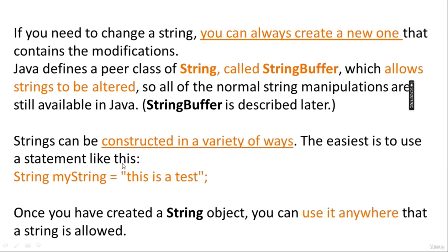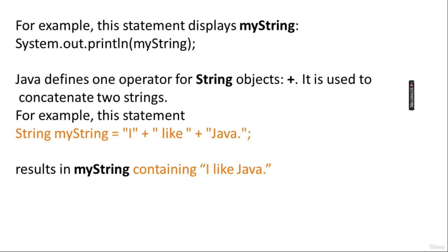To construct a String, the syntax is: String myString = "pc the test". Once you have created and initialized a String object, you can use it anywhere that a string is allowed. For example, this statement displays myString: System.out.println(myString). Java defines one operator for String objects — the '+' operator — used to concatenate two strings.